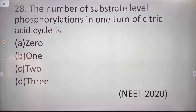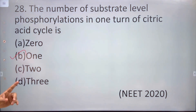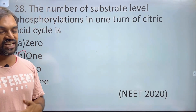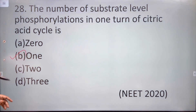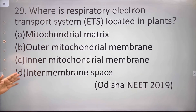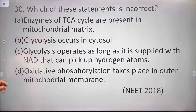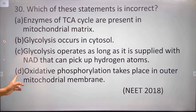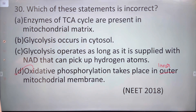The number of substrate-level phosphorylations in one turn of the citric acid cycle is one. The respiratory electron transport system in plants is located in the inner membrane of the mitochondria. Oxidative phosphorylation takes place in the inner membrane — not the outer membrane, so a statement claiming the outer membrane is incorrect.